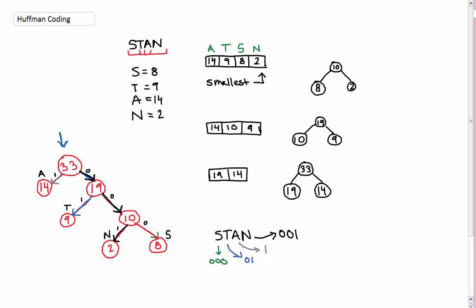So that means that this whole string — a connected STAN — can be represented by the sequence 0-0-0, 0-1, 1, and 0-0-1. So this little binary sequence here is essentially the string STAN.